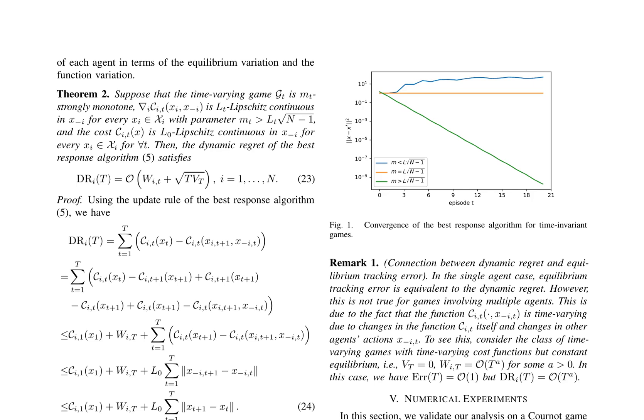In the realm of time-varying games, a critical metric for evaluating algorithmic performance is dynamic regret, the difference between an algorithm's cumulative loss and the cumulative loss of the optimal strategy in hindsight. This paper presents a theorem that establishes a sublinear dynamic regret in T, under specific conditions on the game's variation. The theorem also elucidates the connection between dynamic regret and equilibrium tracking error, highlighting their distinctiveness in multi-agent scenarios.